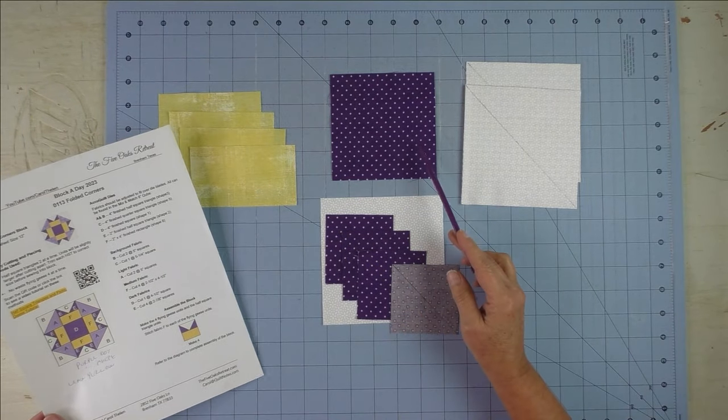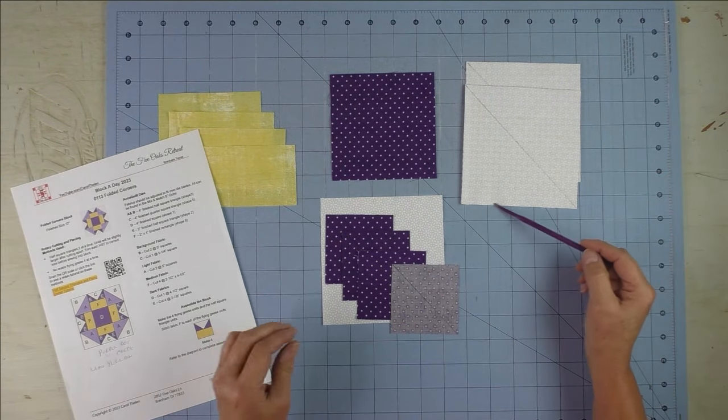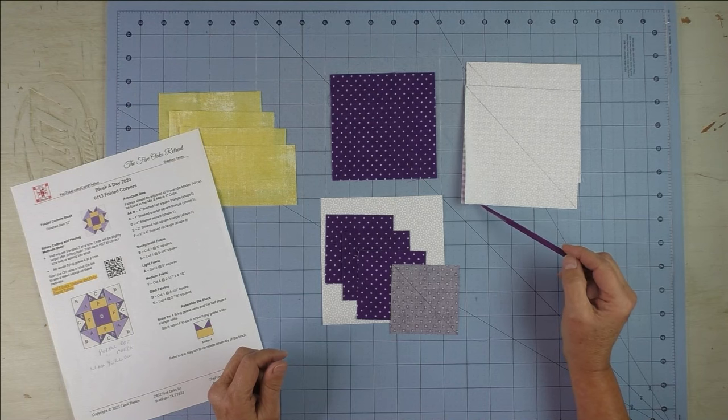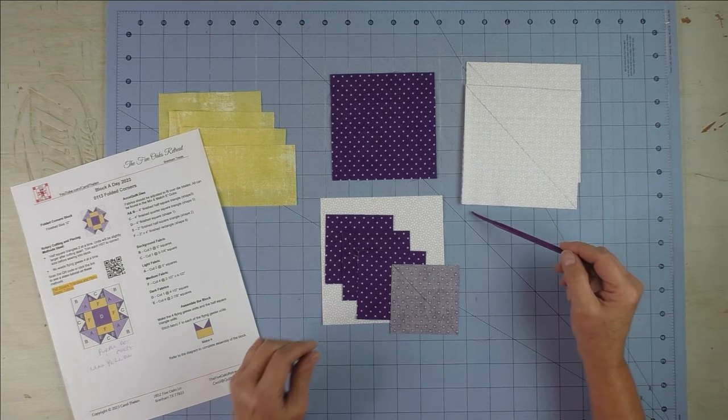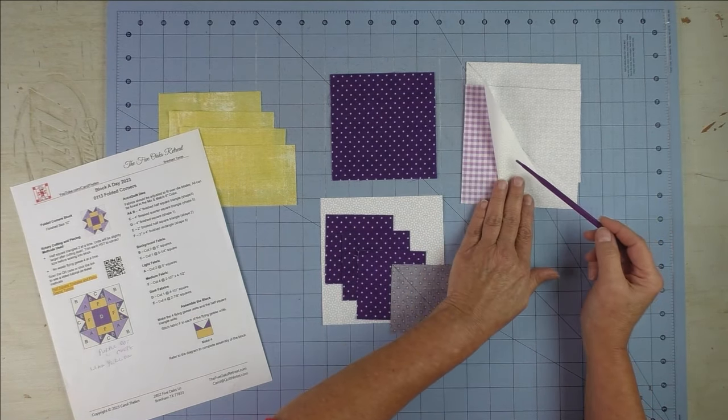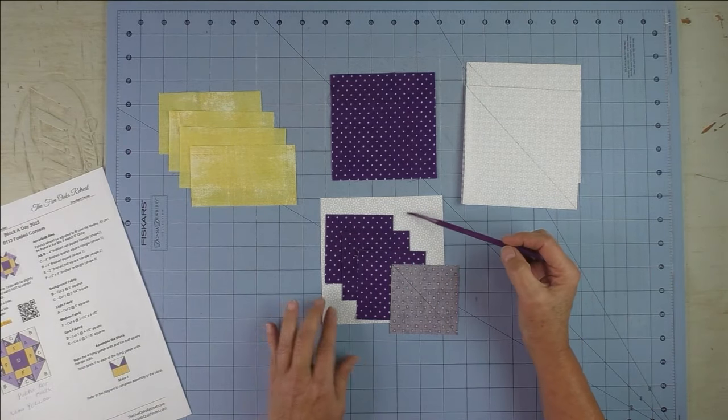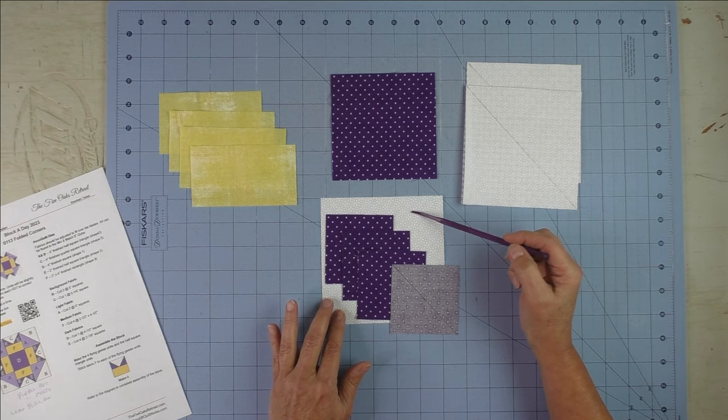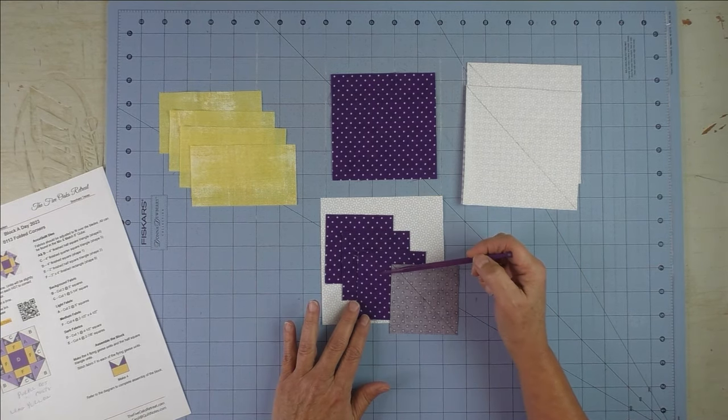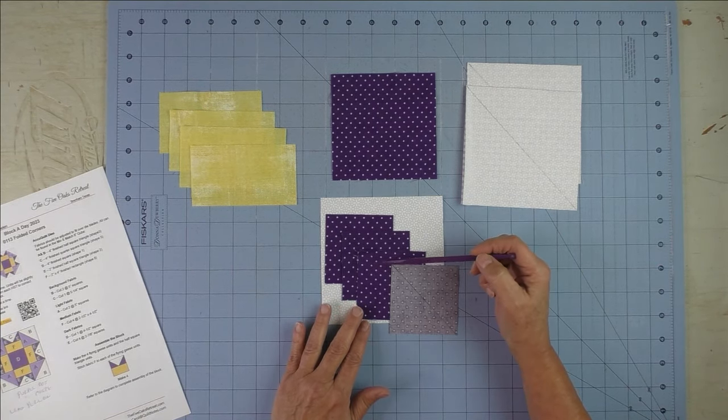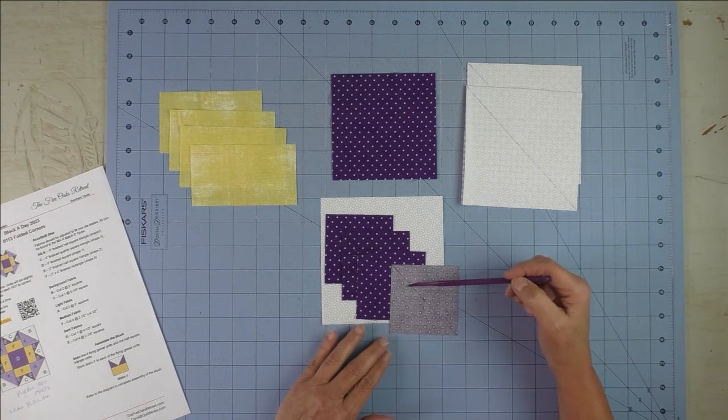And then these are the squares for the half square triangles two at a time, and they're already marked with the diagonal. These are the background and this is the geese, and these are actually the sky. So we have a dark sky on our flying geese and these are marked as well.